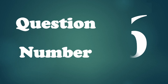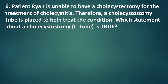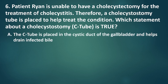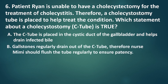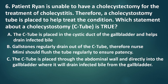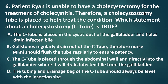Question number 6. Patient Ryan is unable to have a cholecystectomy for the treatment of cholecystitis. Therefore, a cholecystostomy tube is placed to help treat the condition. Which statement about a cholecystostomy, also known as a C-tube, is true? A. The C-tube is placed in the cystic duct of the gallbladder and helps drain infected bile. B. Gallstones regularly drain out of the C-tube; therefore, Nurse Mimi should flush the tube regularly to ensure patency. C. The C-tube is placed through the abdominal wall and directly into the gallbladder where it will drain infected bile. D. The tubing and drainage bag of the C-tube should always be level with the insertion site.